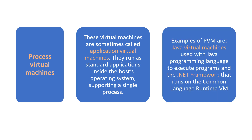Examples of process virtual machines include the Java Virtual Machine, used with the Java programming language to execute programs, and the .NET Framework that runs on the Common Language Runtime VM. In summary, process virtual machines are application virtual machines that run as standard applications inside the host operating system, supporting only a single process rather than all operations of the OS.